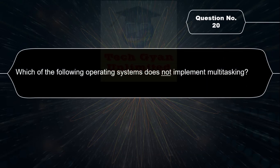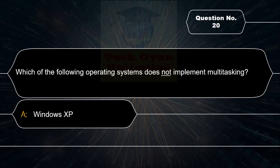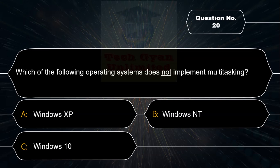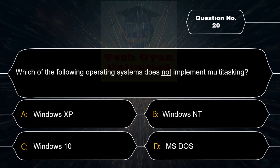Which of the following operating systems does not implement multitasking? Option A: Windows XP, Option B: Windows NT, Option C: Windows 10, Option D: Microsoft DOS. The correct answer is Option D — Microsoft DOS does not implement multitasking.